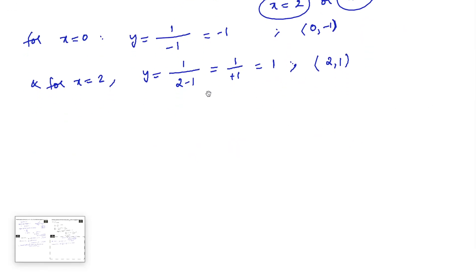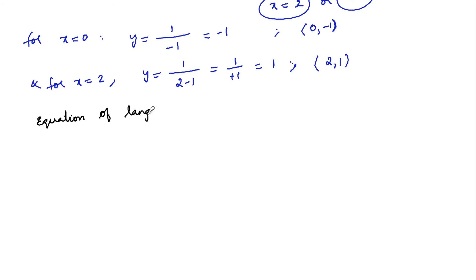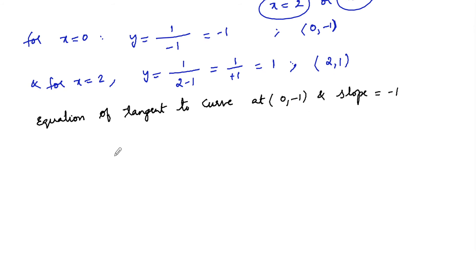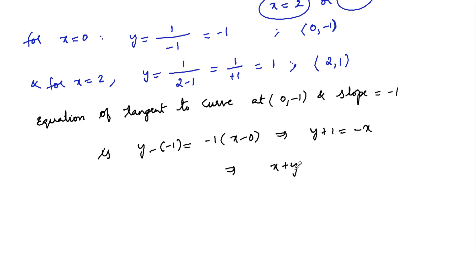Let's find the equations of tangents at these points. Equation of tangent to the curve at (0, -1) with slope -1: y - (-1) = -1(x - 0), giving y + 1 = -x, or x + y + 1 = 0. This is one of the tangent equations.